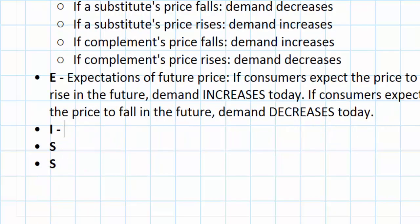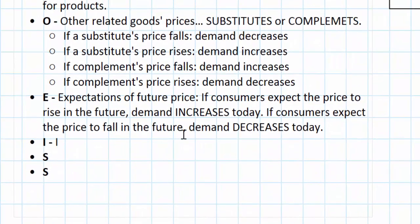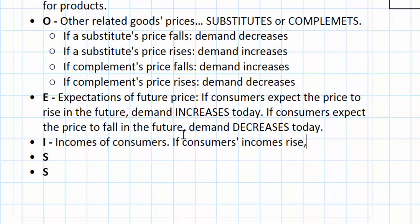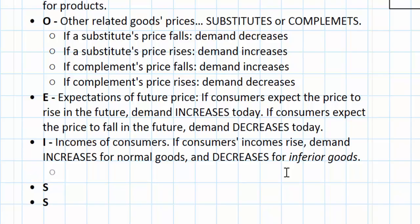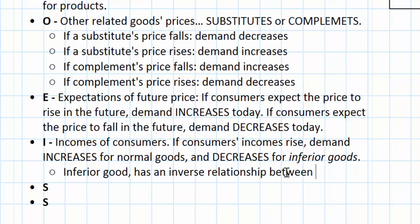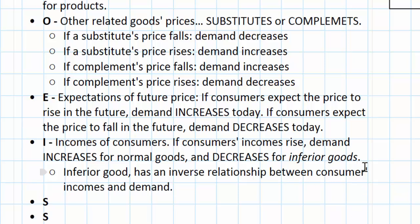The I stands for incomes of consumers. If consumers' incomes rise, demand increases for normal goods and decreases for inferior goods. Inferior and normal do not refer to the quality of a good necessarily; rather, they refer to the nature of a good. An inferior good has an inverse relationship between consumers' incomes and demand. What are some examples of goods that consumers might buy less of when their incomes rise and more of when their incomes fall?